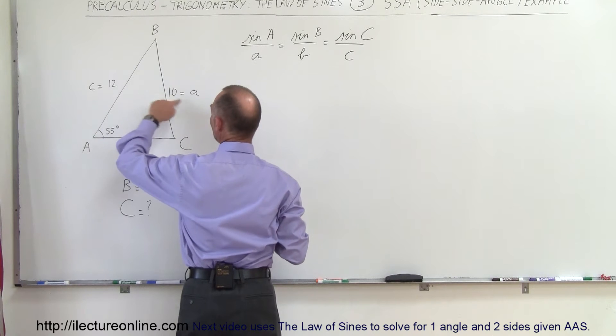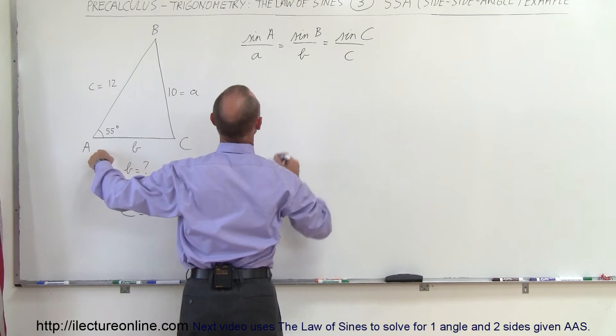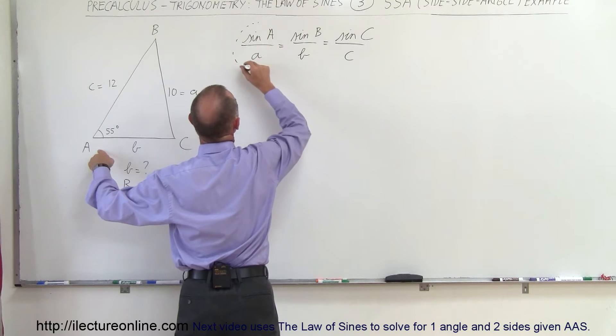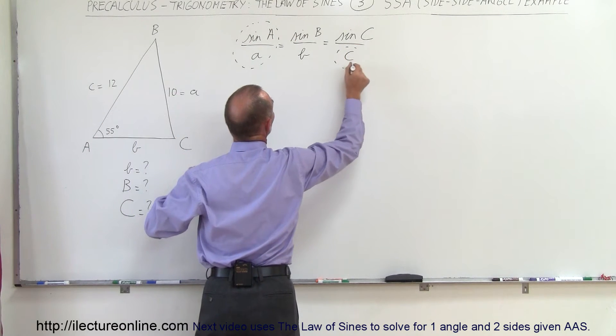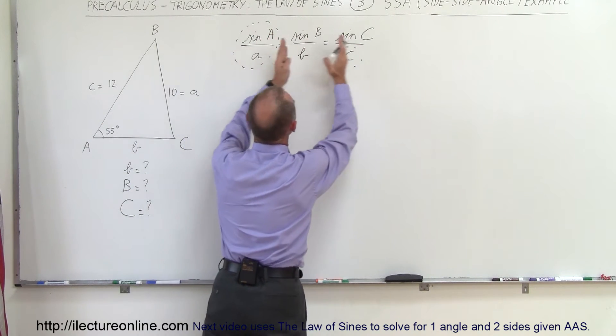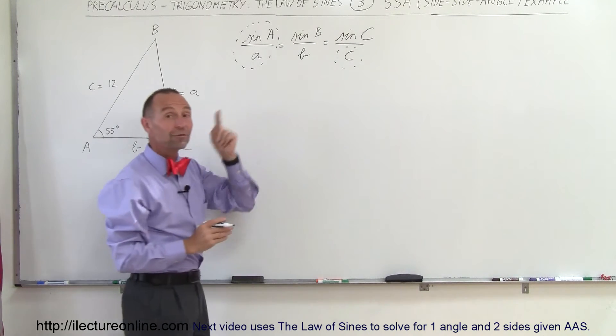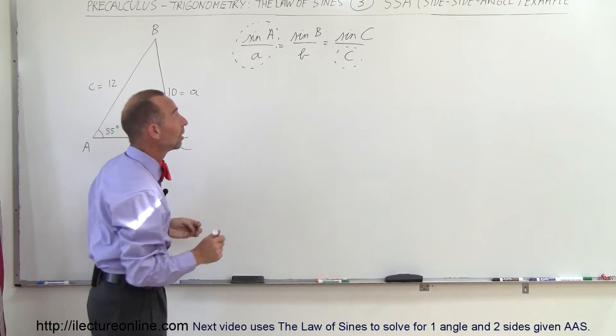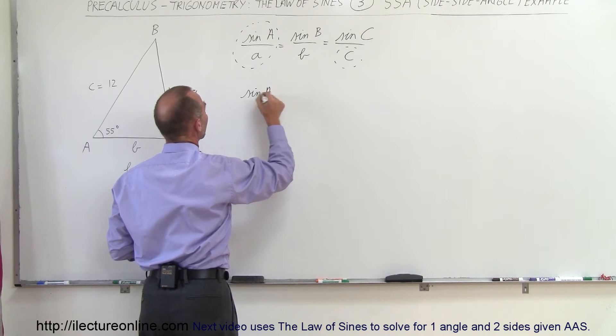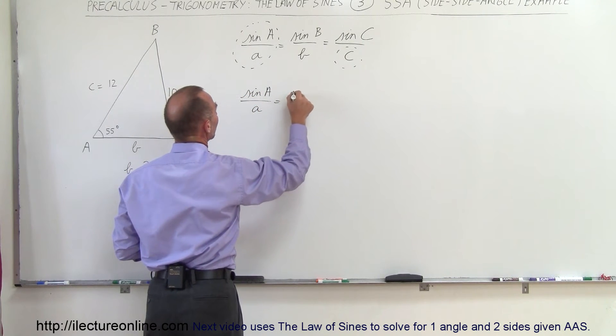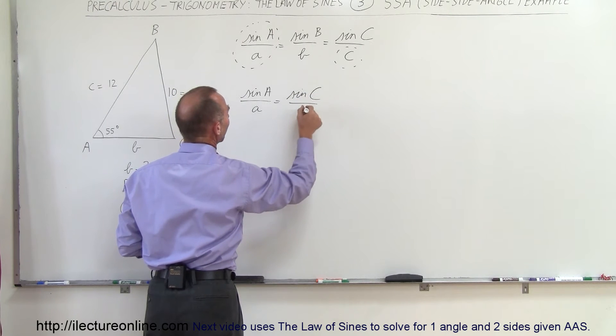Now notice that we know C and A and angle A. So we know these two and we know side C. So what we can then do is we can set this equal to that part of the equation and then solve for the only remaining unknown which is the angle C.